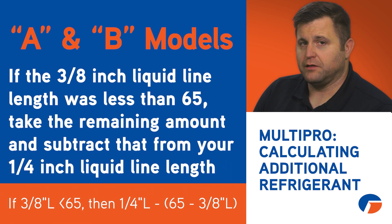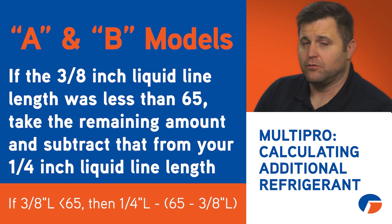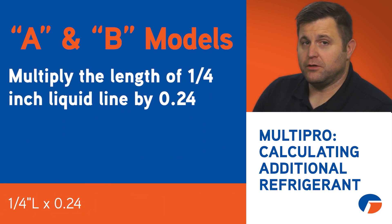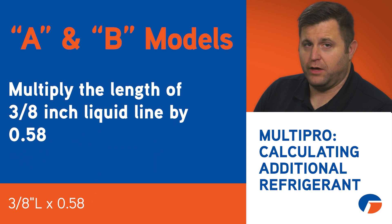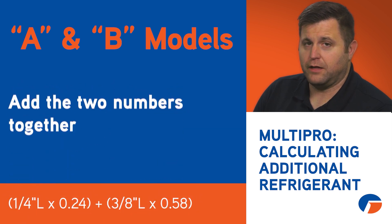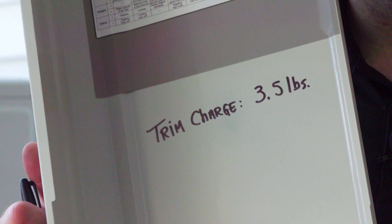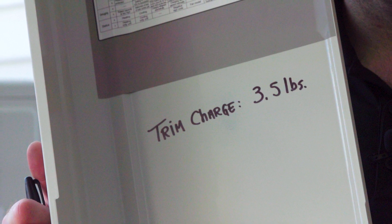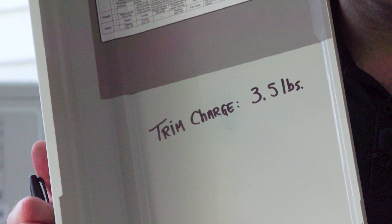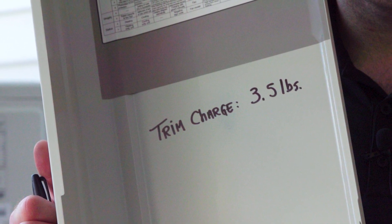You'll take the length of your three-eighths liquid line first and subtract 65 from this length. If your three-eighths liquid line length was less than 65, take the remaining amount and subtract that from your quarter-inch liquid line length. Then you'll multiply your length of quarter-inch by 0.24 and your length of three-eighths by 0.58 and add those two numbers together. Round up to the nearest ounce and write that number down on the inside of the access panel on the outdoor unit for future reference.